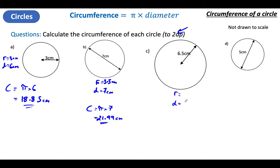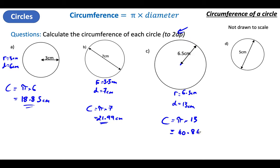Next one. R equals, D equals. This is a radius because it only goes from the center to the outside — only half the way across. So that's my radius, which means my diameter must be double that — so it's 13 centimeters. Circumference equals Pi times by my diameter of 13, which is 40.84 centimeters to two decimal places.